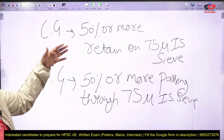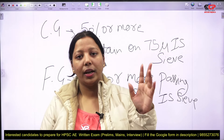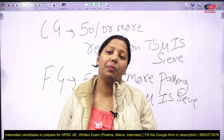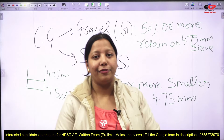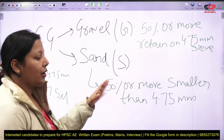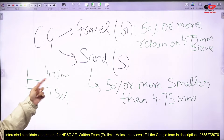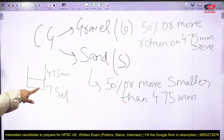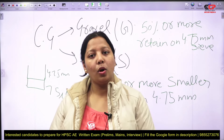When is soil coarse-grained? When 50% or more particles are retained on the 75 micron IS sieve. If more than 50% passes through 75 micron, it is fine-grained soil. For coarse-grained soil, there is gravel and sand. Gravel is when 50% or more particles are retained on the 4.75 mm sieve. If 50% or more particles pass through 4.75 mm, it is sand. Fine-grained soils are classified through the plasticity chart.